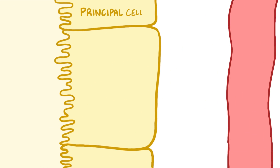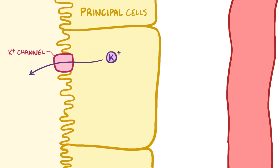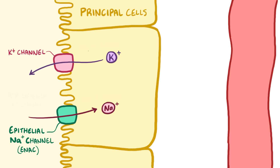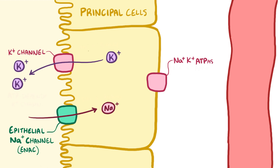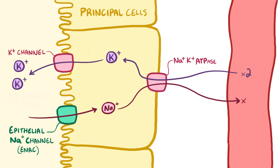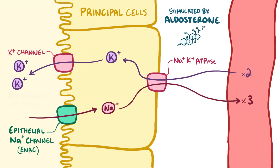The other group of cells are the principal cells. These cells have two channels on the apical surface: a potassium channel that allows potassium into the lumen, and an epithelial sodium channel called ENAC that allows sodium into the cell. The flow of positively charged sodium ions into the cell helps drive the positively charged potassium ions out of the cell against their concentration gradient. There's also a sodium-potassium ATPase pump on the basolateral surface that moves two potassium ions in for every three sodium ions out. All three of these are stimulated by aldosterone, and the combined effect is reabsorption of sodium and loss of potassium.